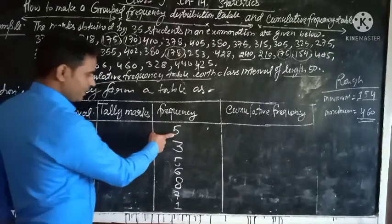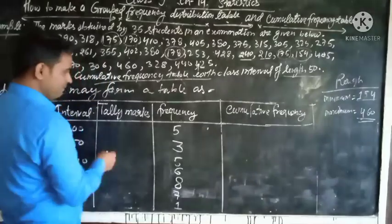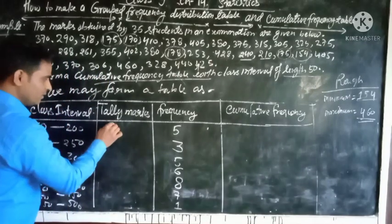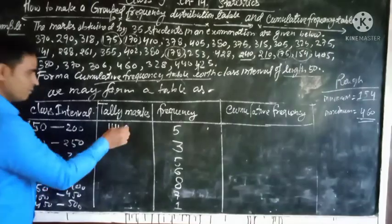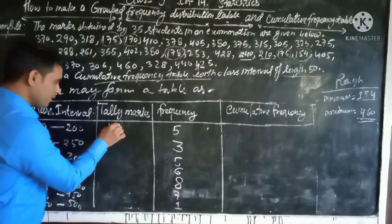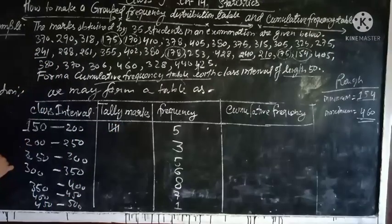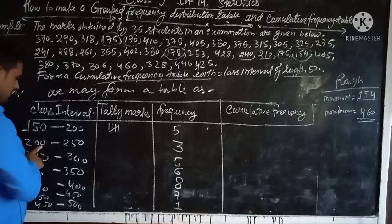So for the data whose frequency is 5, you draw 4 vertical lines and 1 cross. Okay, next.